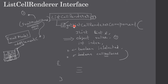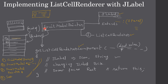Next we talked about the ListCellRenderer interface and the function getListCellRendererComponent, and what parameters it receives. Then we talked about FruitModelPainter, which extends JLabel — meaning FruitModelPainter is a JLabel — and implements the ListCellRenderer interface. At runtime JList calls getListCellRendererComponent, and inside it we paint our JLabel with icon and string, change the label background, and draw focus.